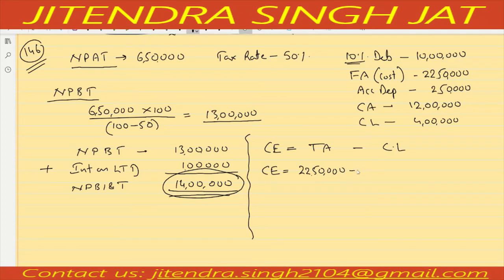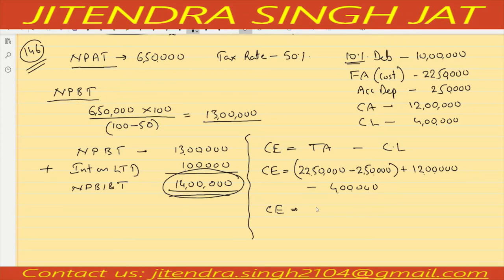For capital employed: fixed assets at cost 22 lakh 50 thousand minus depreciation 2 lakh 50 thousand gives net fixed assets of 20 lakh, plus current assets 12 lakh, minus current liability 4 lakh. So capital employed is 20 lakh plus 12 lakh minus 4 lakh, which equals 28 lakh.